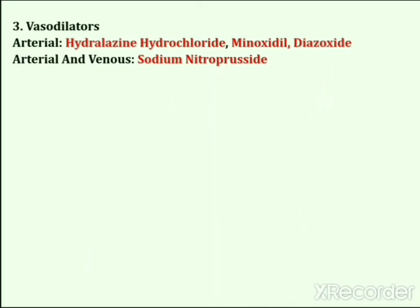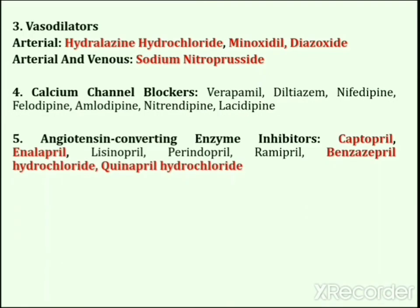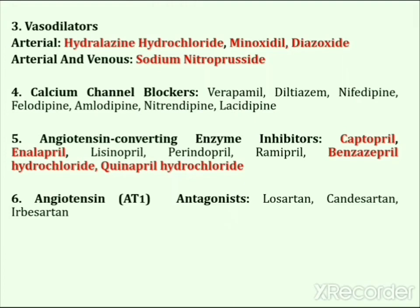The third main category is vasodilators. These medications act directly on the muscles in the wall of arteries and prevent the muscles from tightening and the arteries from narrowing. The fourth main category is calcium channel blockers, which block the movement of extracellular calcium into the cells, causing vasodilation and decreased heart rate. The fifth main category is angiotensin converting enzyme inhibitors, which reduce the conversion of angiotensin I to angiotensin II and prevent vasoconstriction. The last category is angiotensin antagonists, which bind to and inhibit the angiotensin II receptor type 1, thereby blocking arterial contraction and sodium retention effects of the renin-angiotensin system.